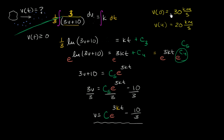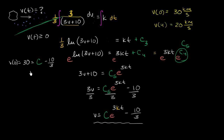Using the first data point: V(0) = 30. When T equals zero, e^(3K·0) = 1, so 30 = C − 10/3. Since 30 equals 90/3, adding 10/3 to both sides gives C = 100/3.